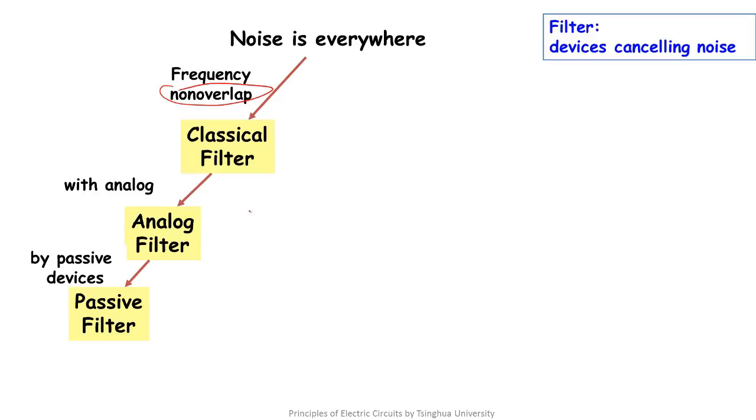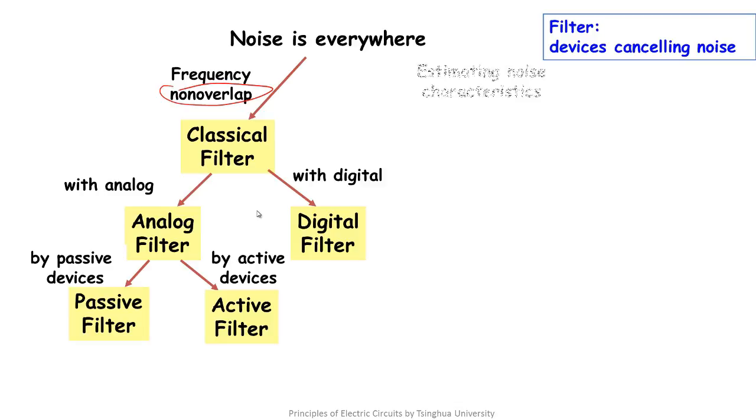If the analog filter is implemented by passive elements, it's called the passive filter. If it's implemented by active elements, it's called the active filter. If the classic filter is implemented by digital system, it's called a digital filter.